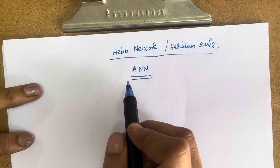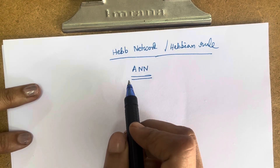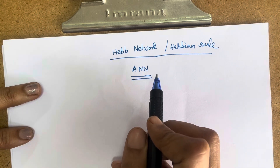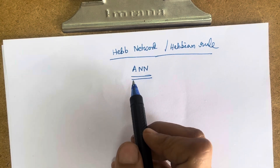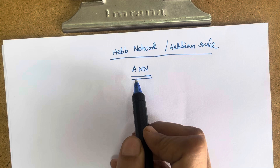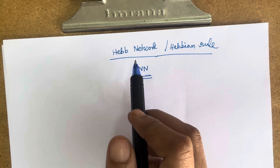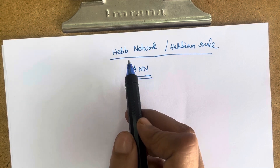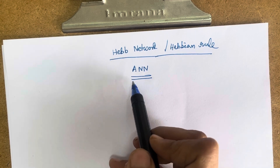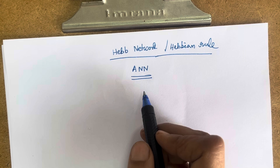Good morning everyone. Welcome back to my channel. Today we are going to see the Hebb network or Hebbian rule. This network comes under artificial neural network, which is an architecture of a large number of interconnected elements called neurons. We are going to learn the Hebb network today, which is one of the easiest learning rules under artificial neural network.